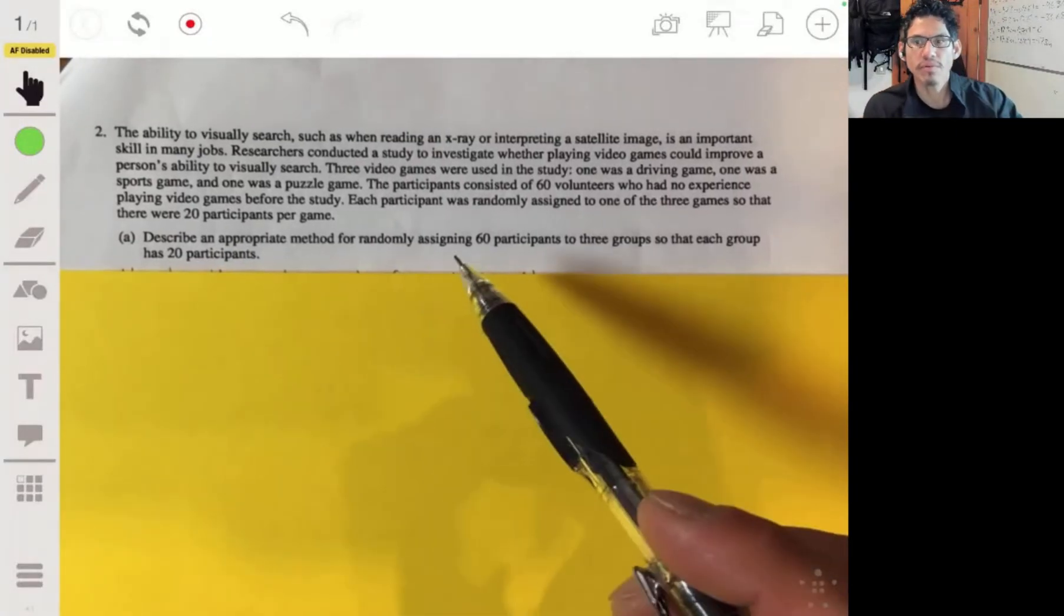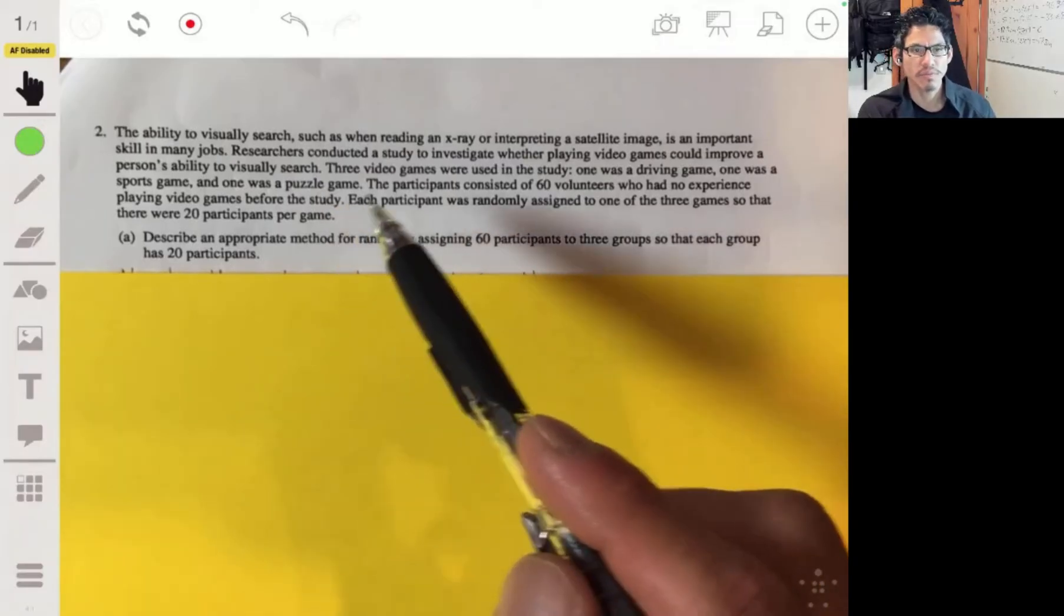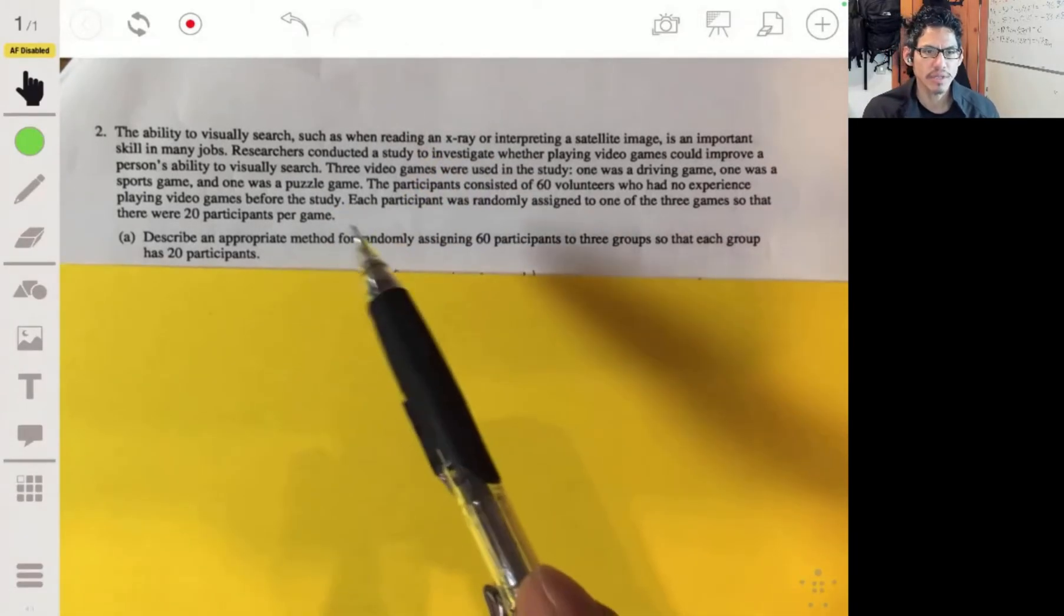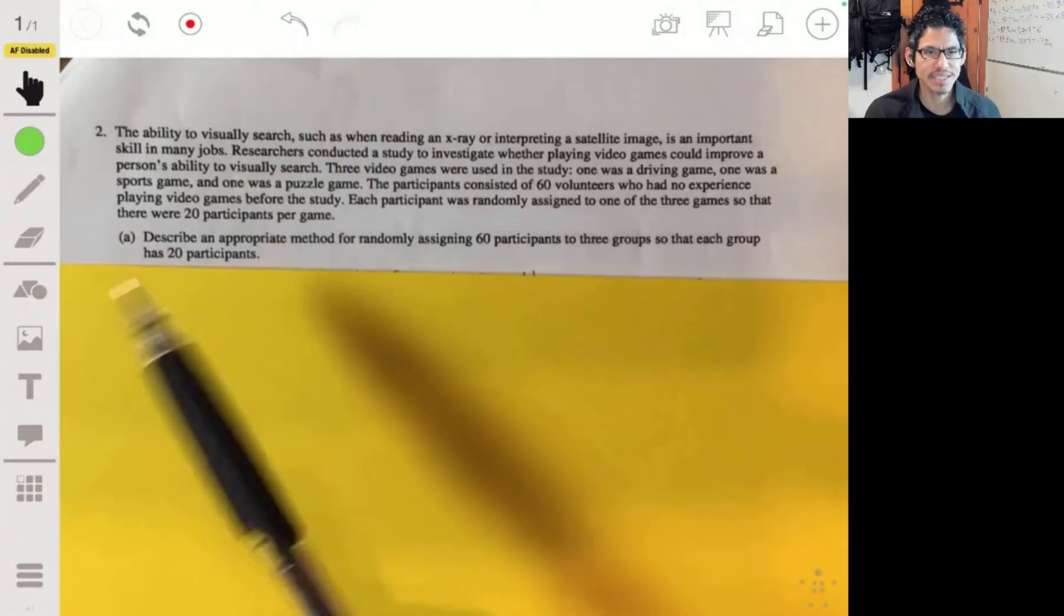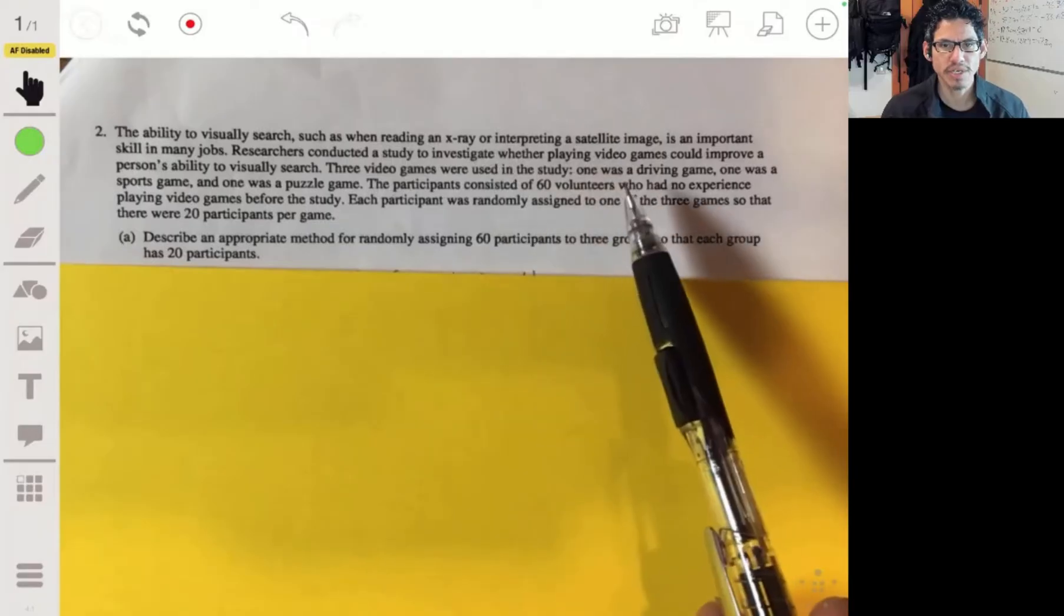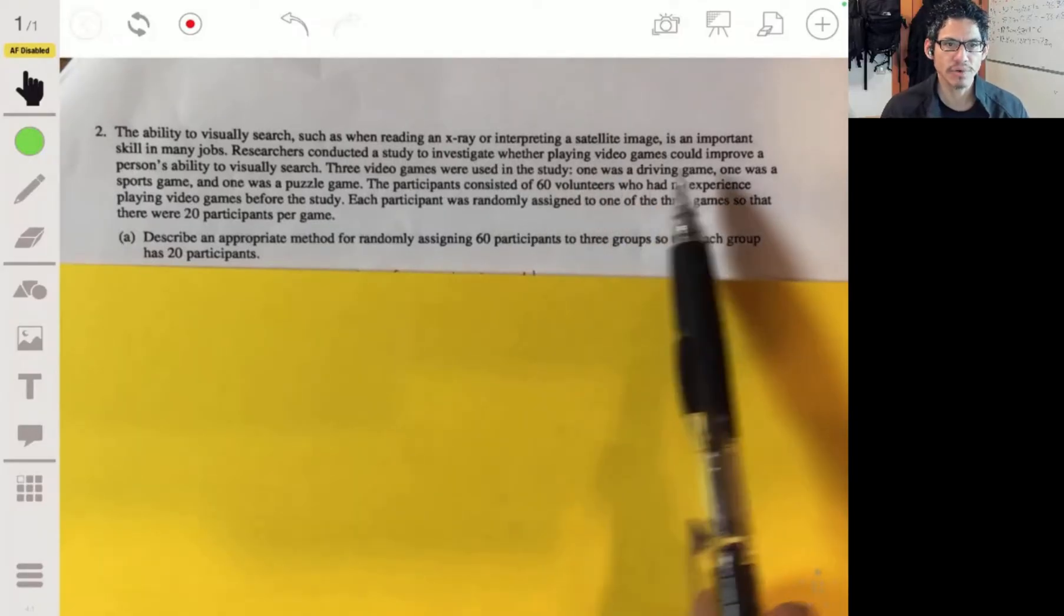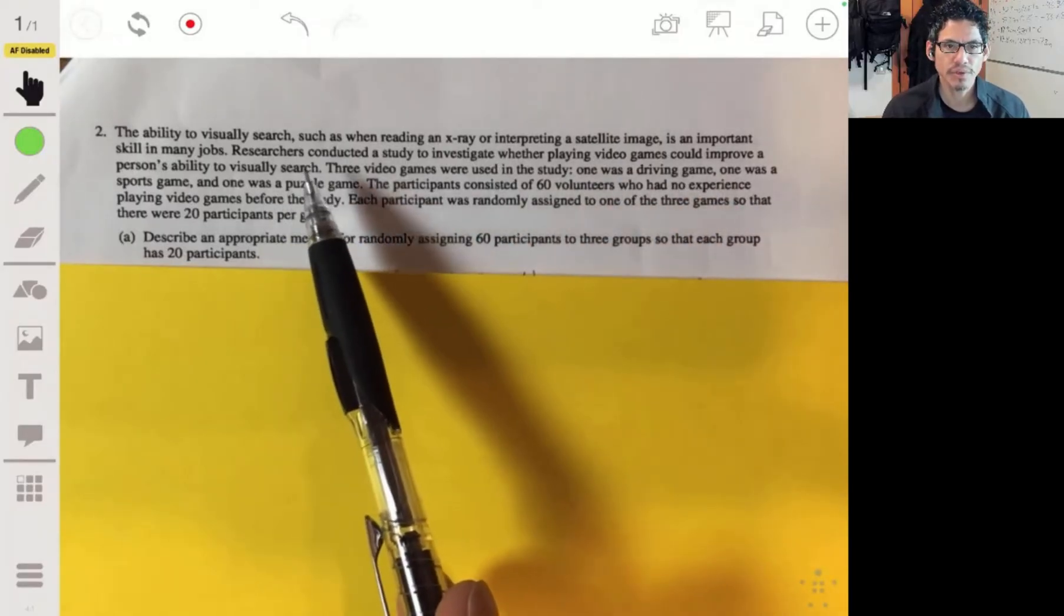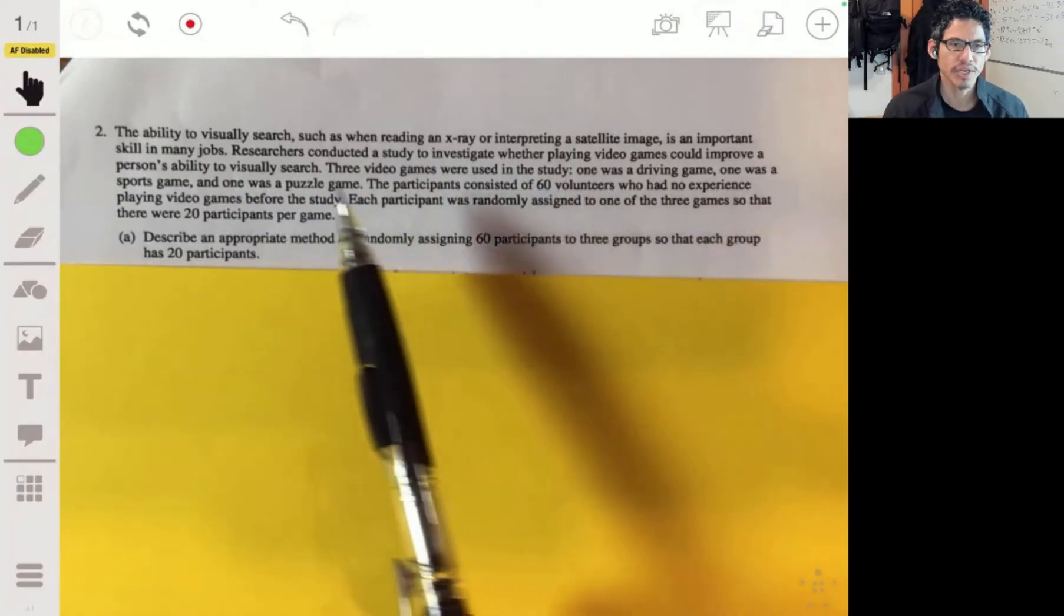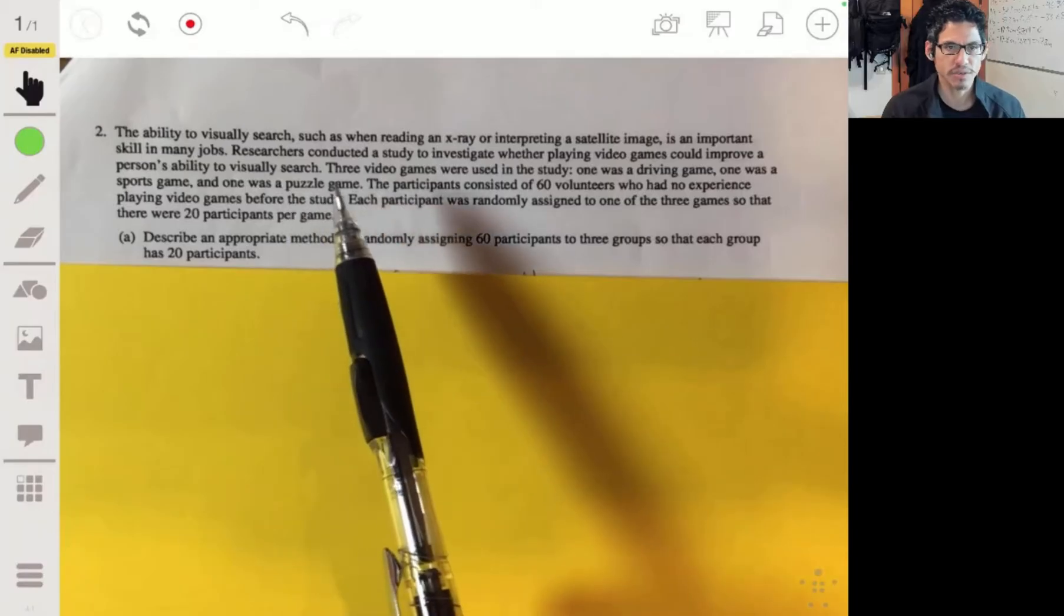Alright, so here we're going to go over free response question two from the 2017 AP Statistics exam. The question says the ability to visually search, such as when reading an x-ray or interpreting a satellite image, is an important skill in many jobs.